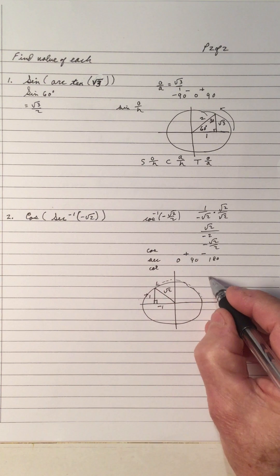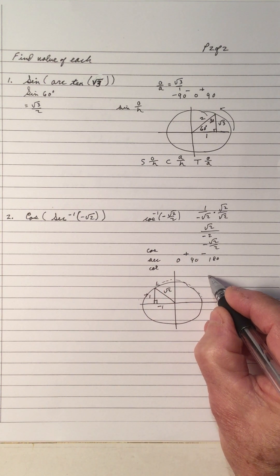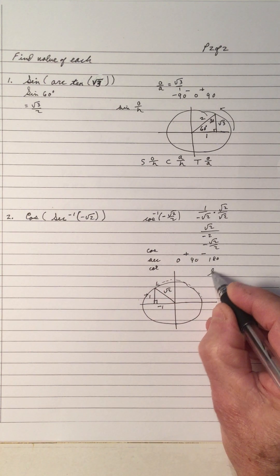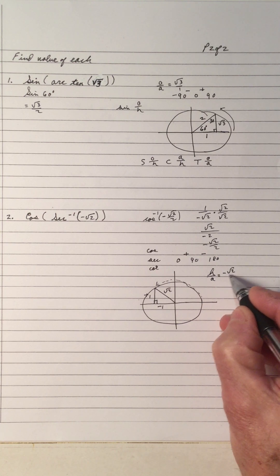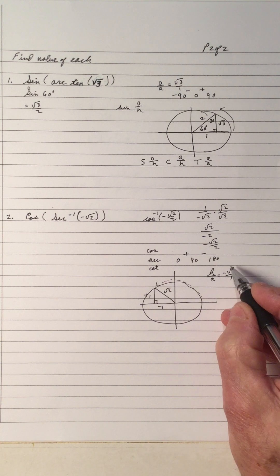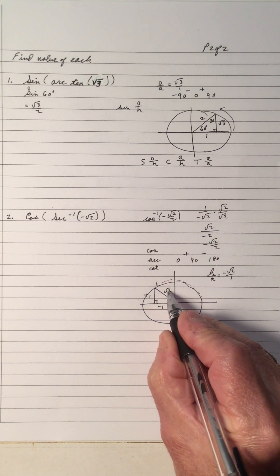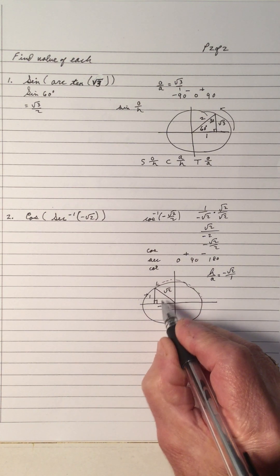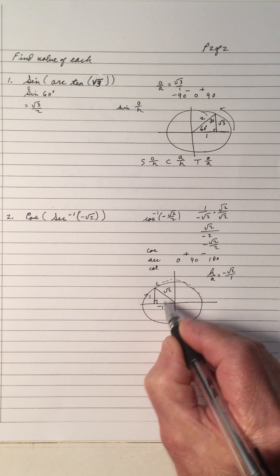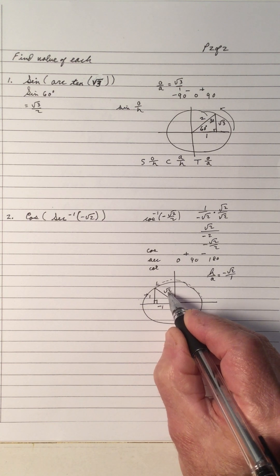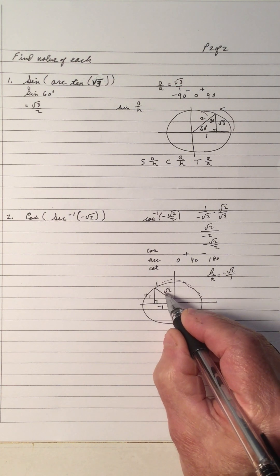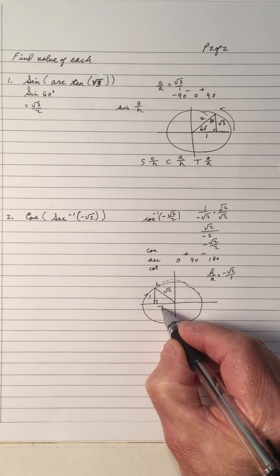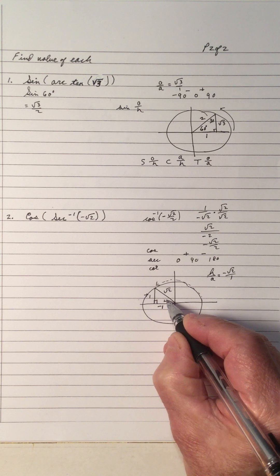We could have, if we wanted to, we could have gone with secant is hypotenuse over adjacent. So, that would have been a negative root 2 over 1. So, this is root 2. This is 1. But, the hypotenuse is positive. And this is the negative. So, even though it has negative there, this is positive. This must be the negative. So, this angle has to be a 45.